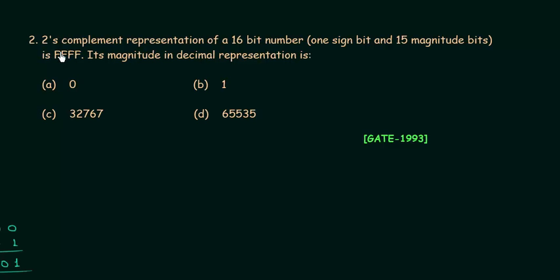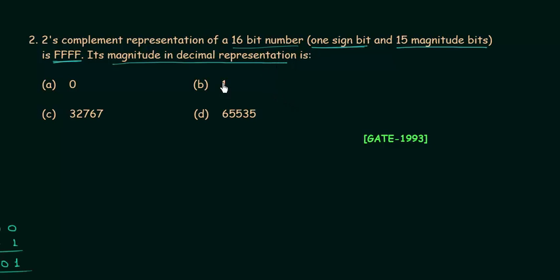In the 2nd problem, we have a 2's complement representation of a 16-bit number in which 1 bit is the sign bit and the other 15 bits are magnitude bits. The number is FFFF in hexadecimal, and we have to find the magnitude in decimal representation.